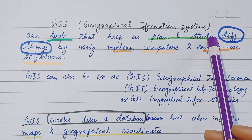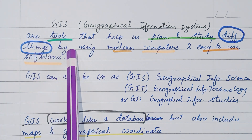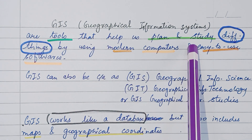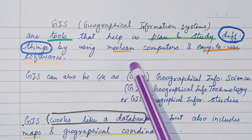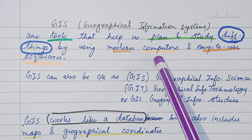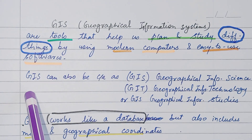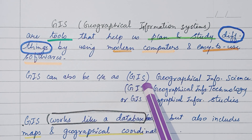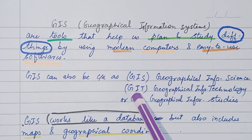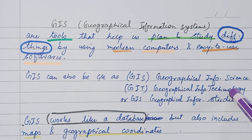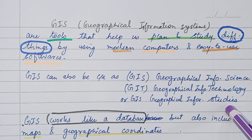Geographical Information Systems — GIS. What is it? These are tools that help us plan and study different things by using modern computers and easy-to-use software. GIS can also be called Geographical Information Science, Geographical Information Technology, or Geographical Information Studies.